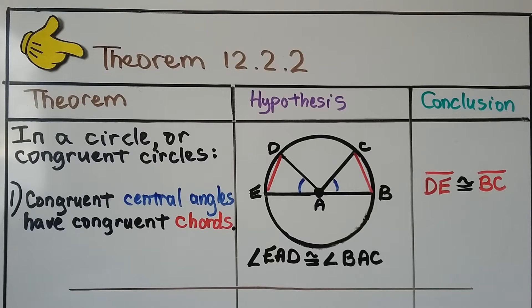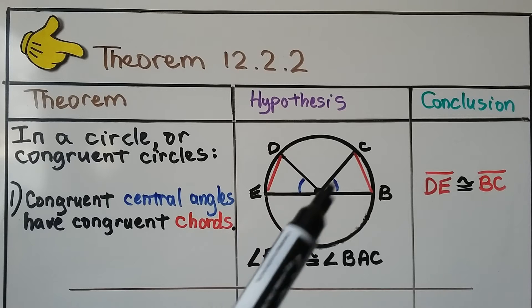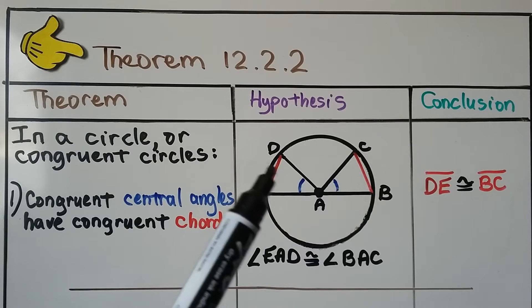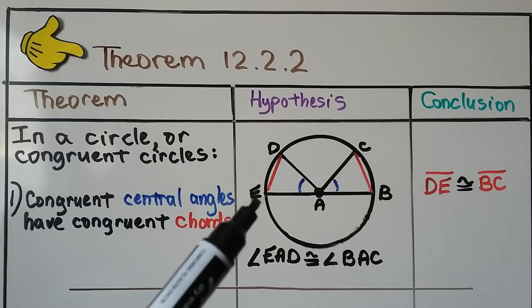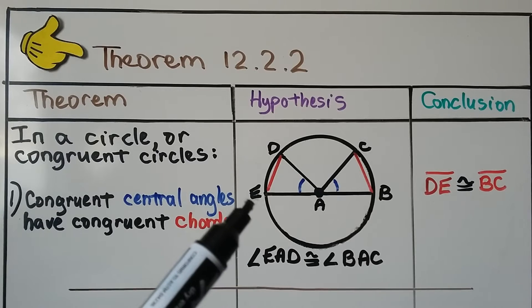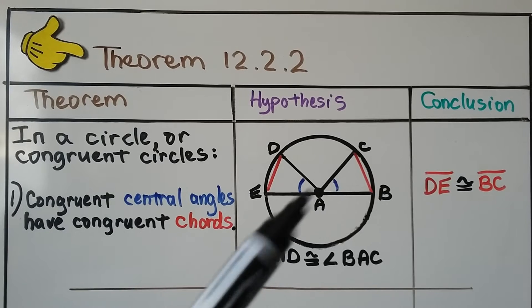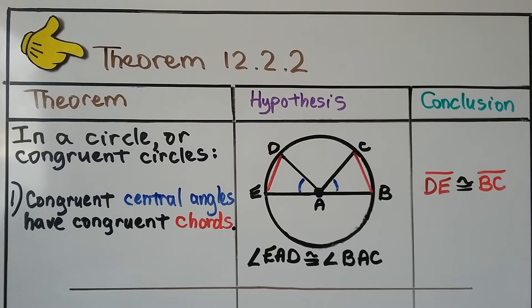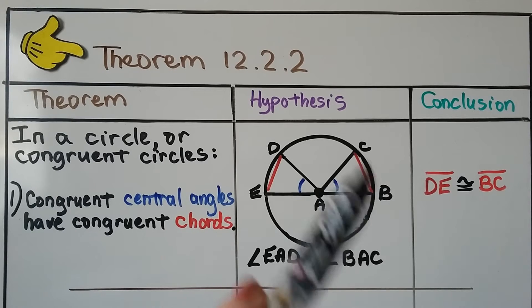So for your notes, we have theorem 12.2.2, and it's broken into three parts. This is part one, we have two and three down below, and we have our theorem, the hypothesis, and the conclusion. So part one says, in a circle or congruent circles, congruent central angles have congruent chords. Angle EAD, this angle here, is congruent to angle BAC. Our conclusion is that segment DE is congruent to segment BC.